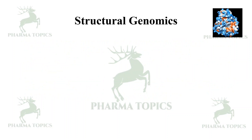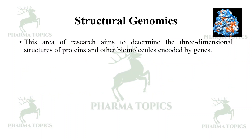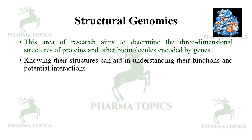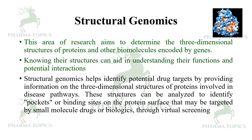Structural genomics aims to determine the three-dimensional structure of proteins and other biomolecules encoded by genes. Knowing their structures can aid in understanding their functions and potential interactions. Structural genomics helps to identify potential drug targets by providing information on the 3D structures of proteins involved in disease pathways. These structures can be analyzed to identify pockets or binding sites on the protein surface that may be targeted by small molecular drugs or biologicals through virtual screening.